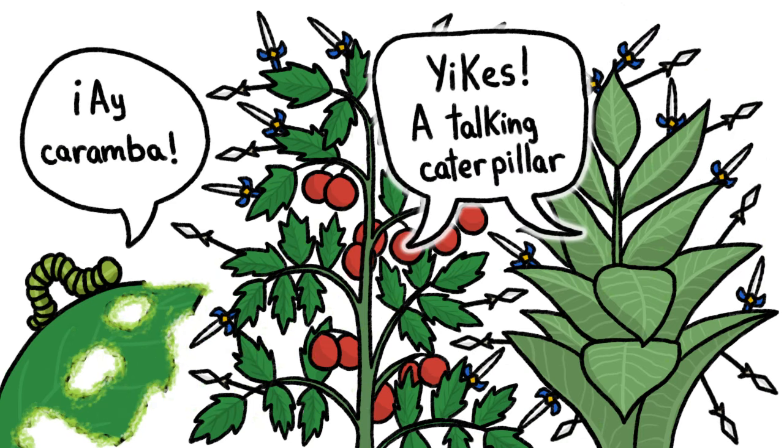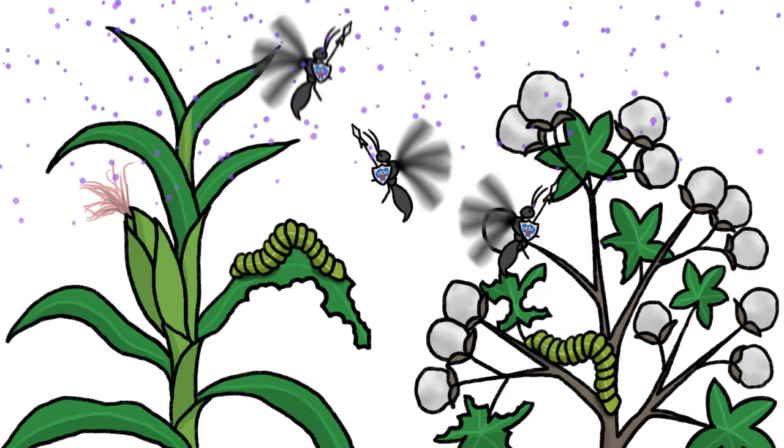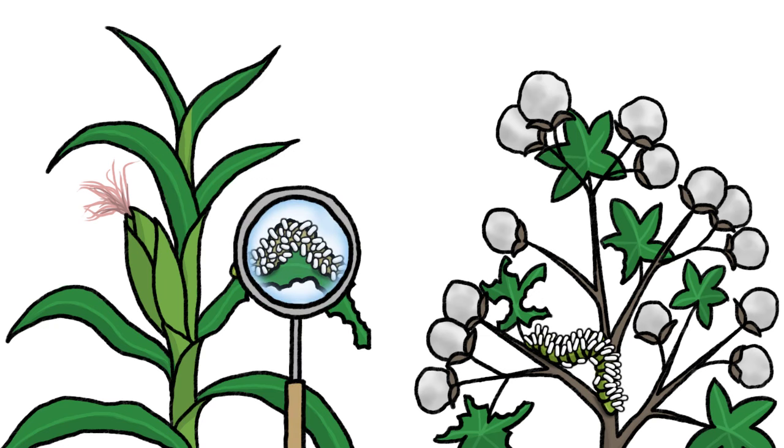Plants can actively communicate, too. Some, like corn and cotton, can summon other animals as defenders. They emit bouquets of chemical compounds that attract parasitic wasps, which inject their eggs into the nutritiously plump caterpillars, so the larva can eat them from the inside out.